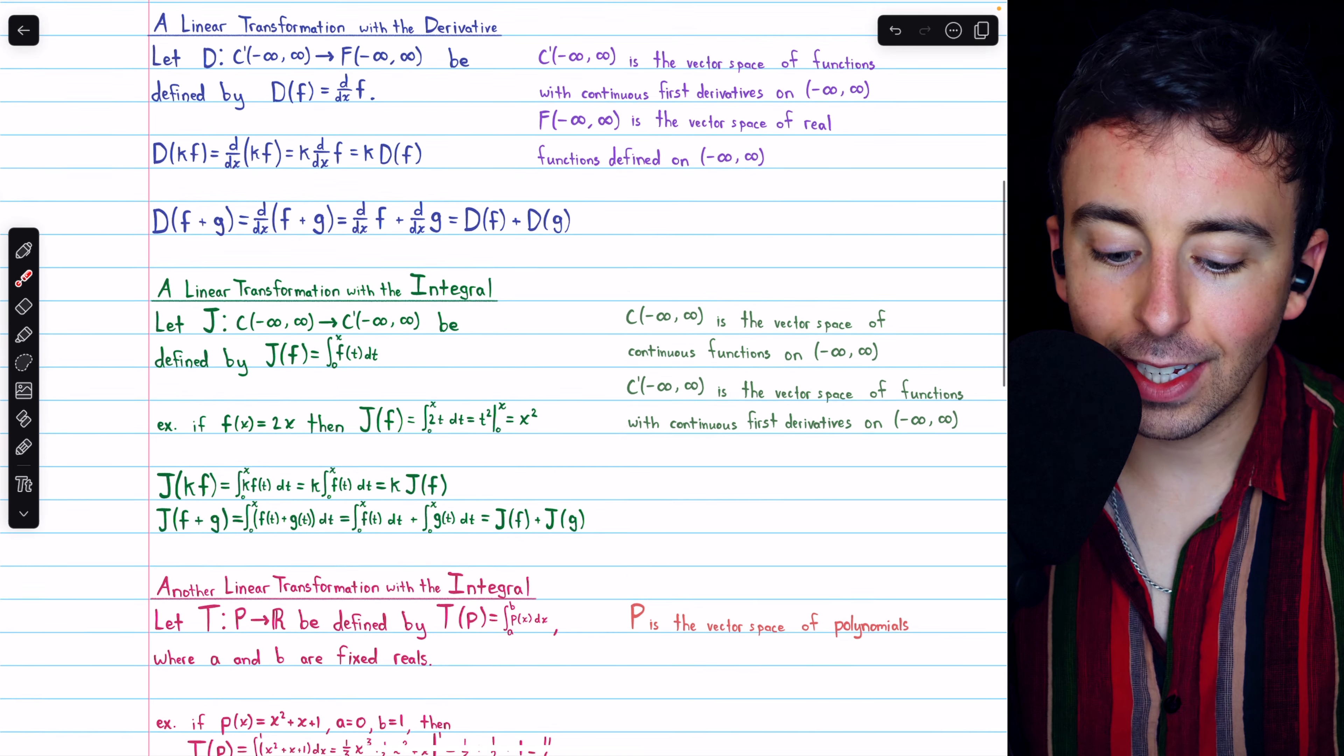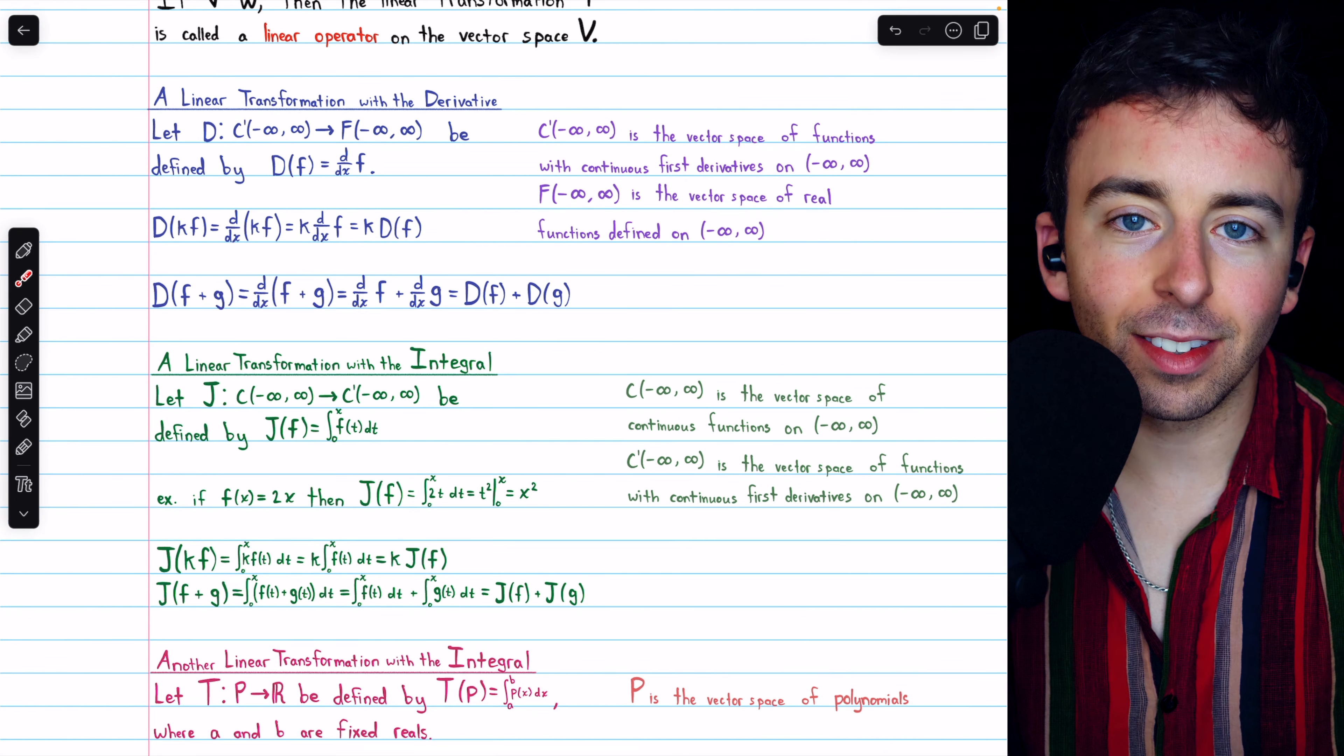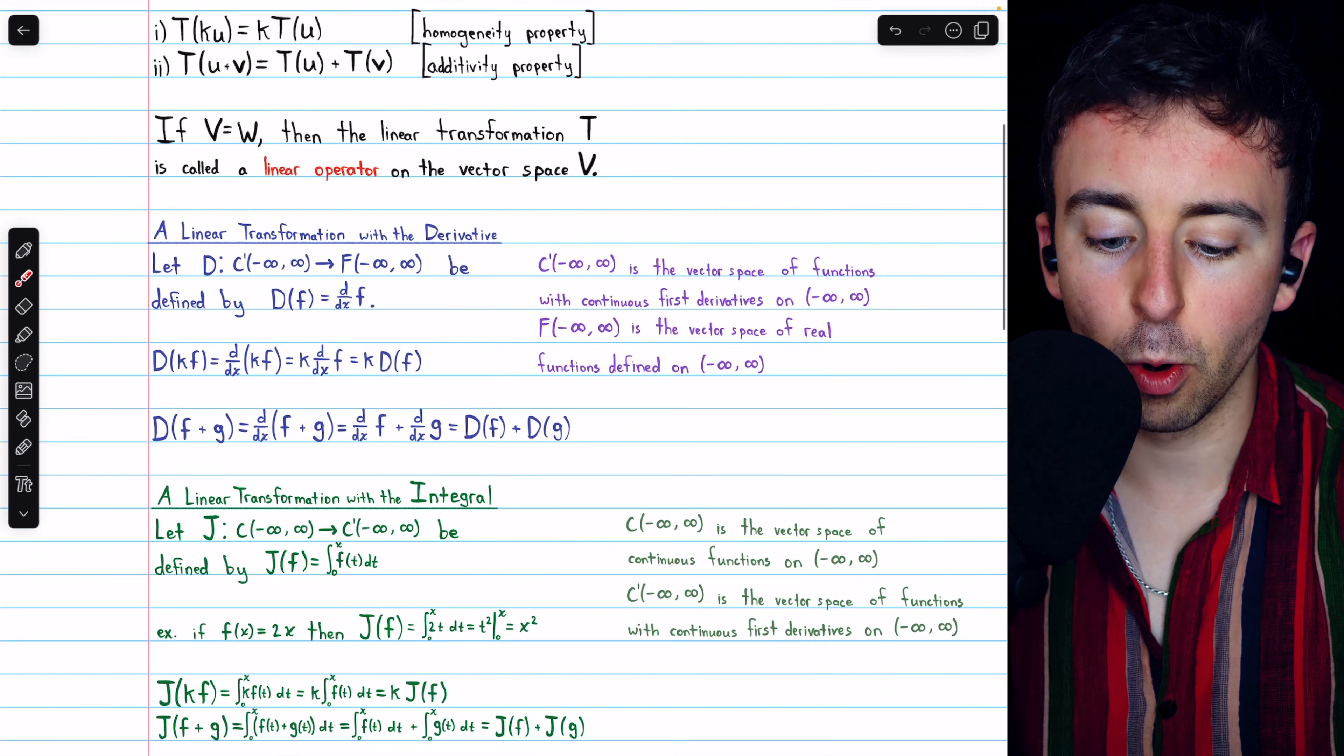Once we leave R^n as our domain and codomain, the available examples of linear transformations become a lot more rich.